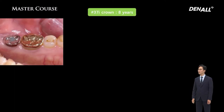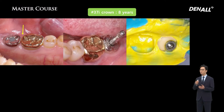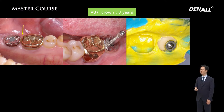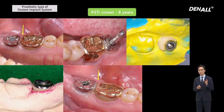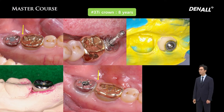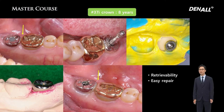This is the same patient 8 years later after screw type prosthesis delivery. The adjacent number 6 has mesially drifted, creating a small gap between numbers 6 and 7, and the patient complained of food impaction. Repair was necessary: the material in the screw hole was removed, the abutment screw was removed, and an impression coping was connected. A model was made and sent to the lab. The loosened contact area was solved by doing contact build-up — repair is very easy.